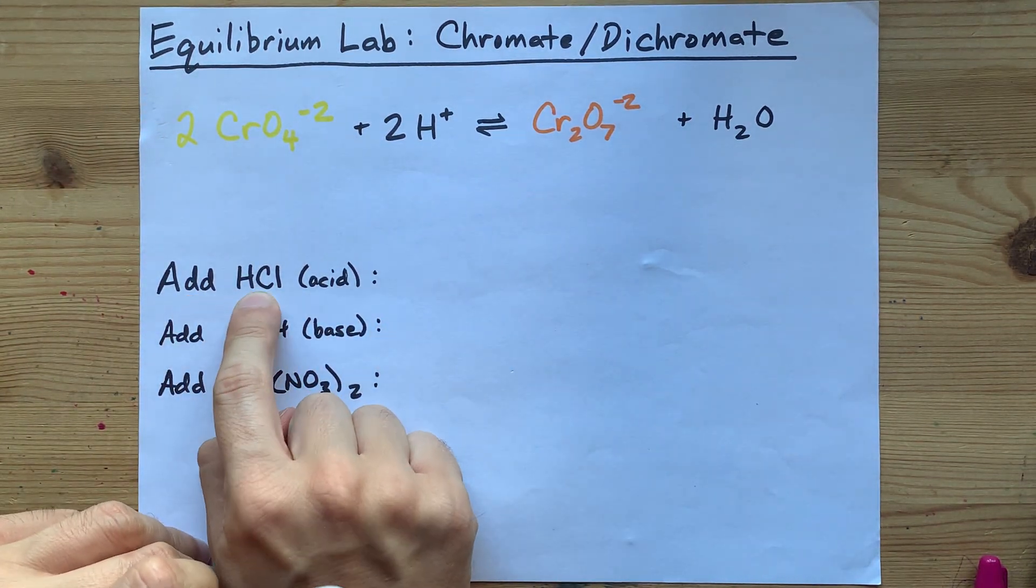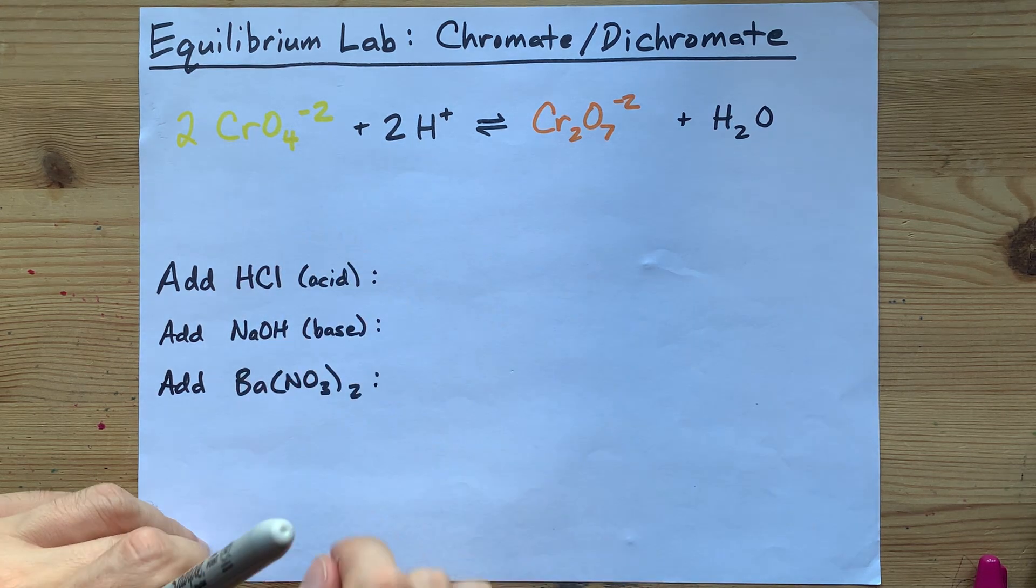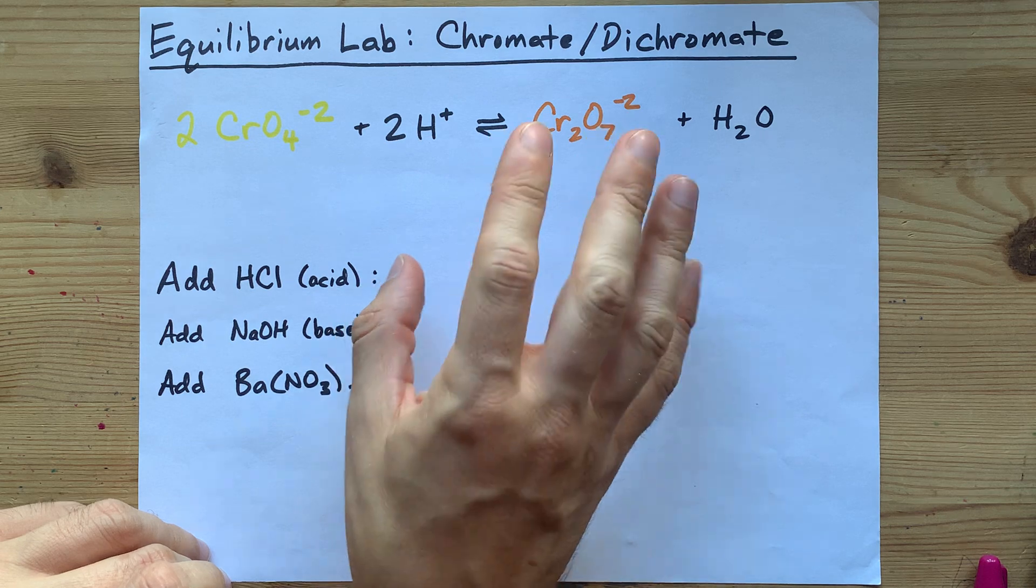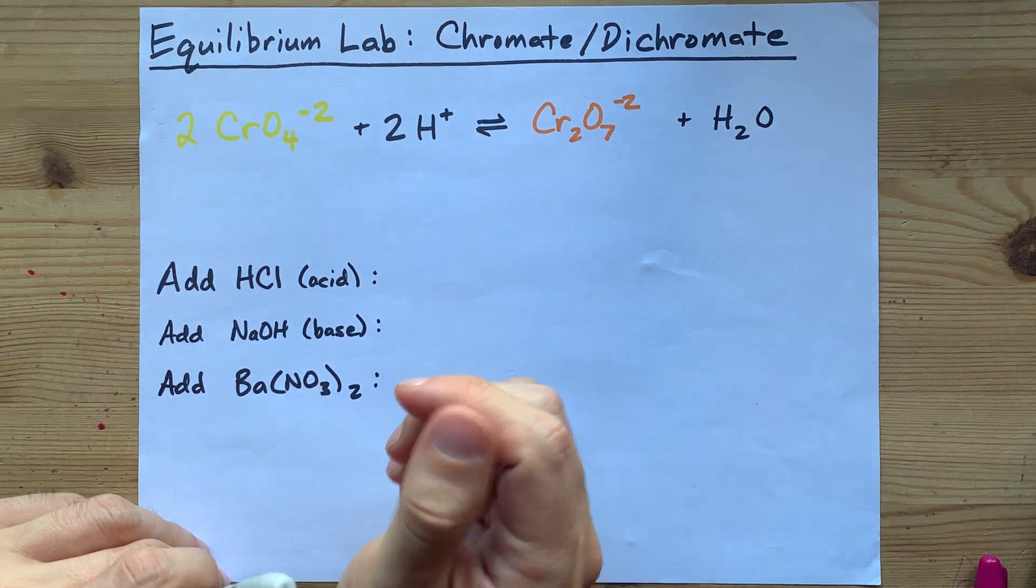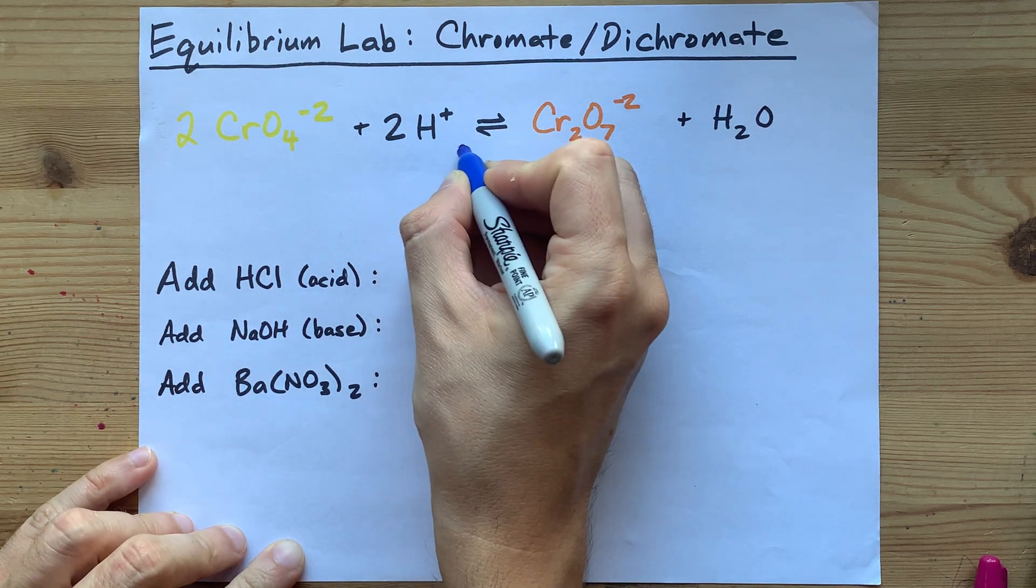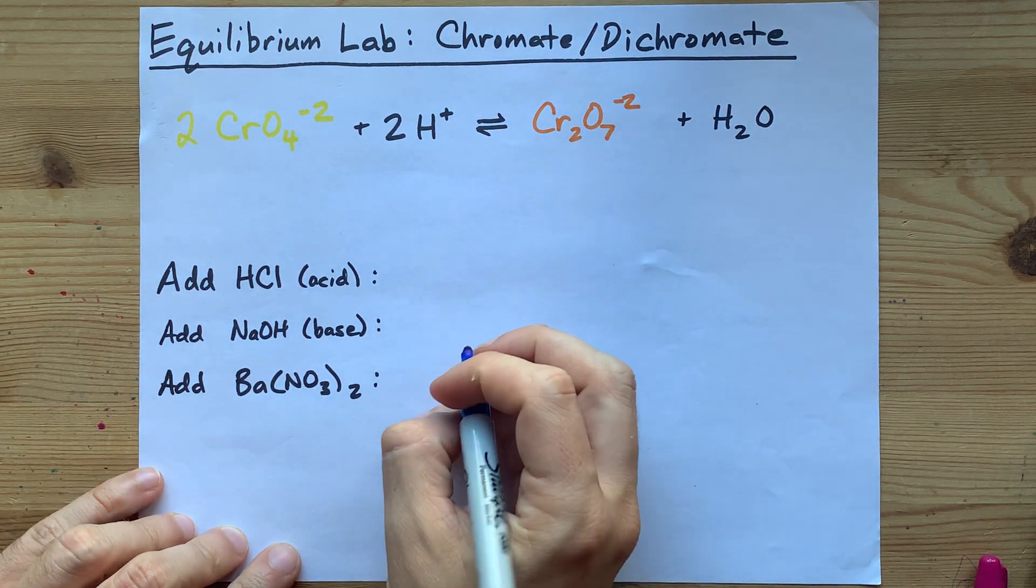So, when you add acid or H+ ions, you're adding a reactant. How can you partially undo that? How can you use some of that up? Well, the answer is you can have a few more of the forward reactions happening.